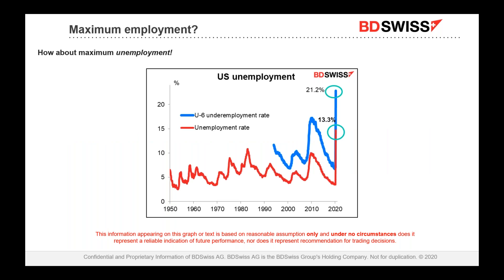Right now we don't have maximum employment — we have maximum unemployment, the highest since records began in 1950. Last month it was even higher, up at around 19%, but currently it's 13%. There are problems with how they calculate this. If you included everyone who wanted a job and couldn't find one, people who gave up looking, and part-time workers wanting full-time, the underemployment rate is over 20%.